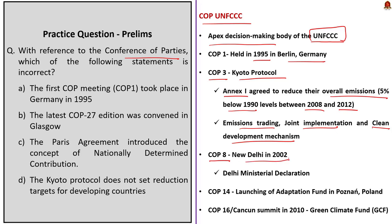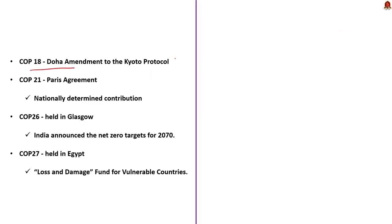COP8 took place in New Delhi in 2002 and adopted the Delhi Ministerial Declaration, calling for developed countries to transfer technology and minimize climate change impact on developing countries. COP14 in Poznan, Poland in December 2008 saw the launch of the Adaptation Fund under the Kyoto Protocol. At COP16 in Cancun in 2010, parties established the Green Climate Fund. COP18 in Doha in 2012 adopted the Doha Amendment to the Kyoto Protocol for a second commitment period from 2013 to 2020. COP21 was held in Paris in 2015, when the famous Paris Agreement was adopted, requiring each ratifying country to set an emission reduction target called the Nationally Determined Contribution (NDC).